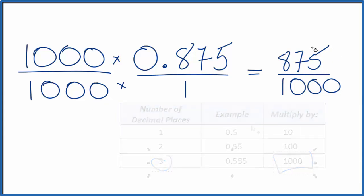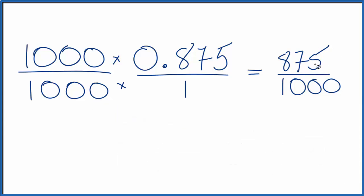So 875 divided by 25, that gives us 35. And 25 goes into a thousand 40 times.